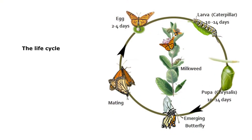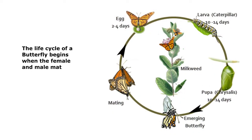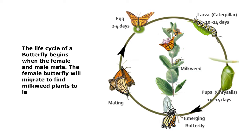The life cycle of a butterfly begins when the female and the male mate. The female butterfly will migrate to find milkweed plants to lay her eggs.